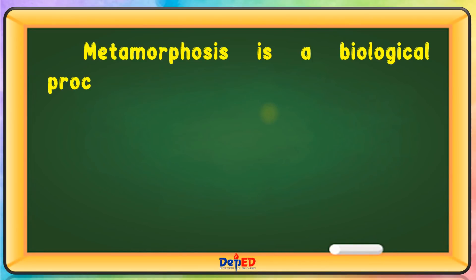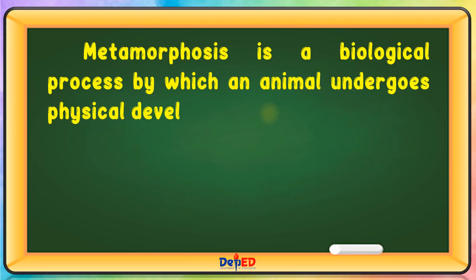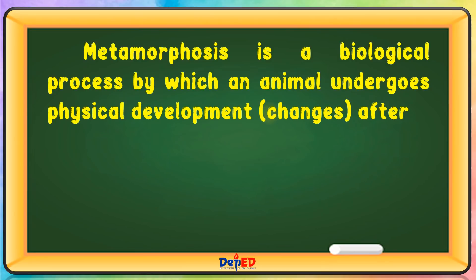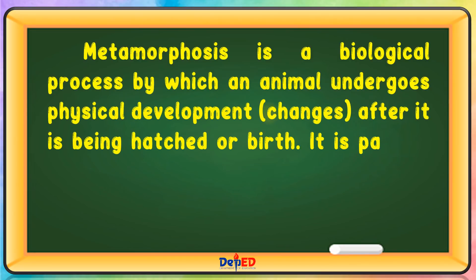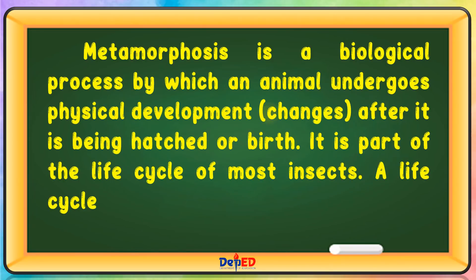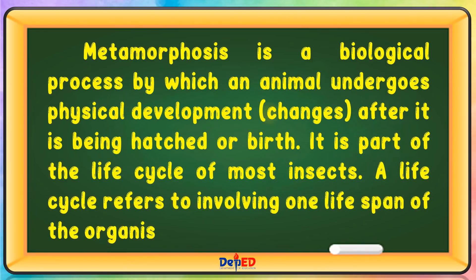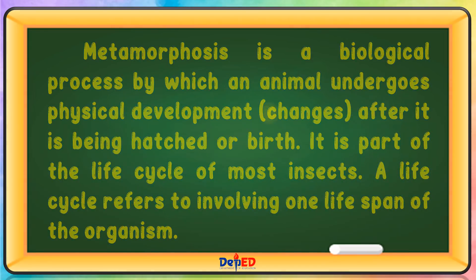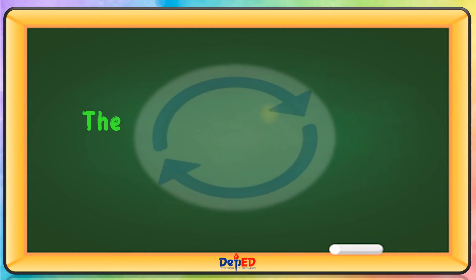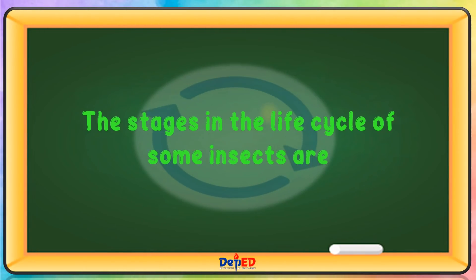Metamorphosis is a biological process by which an animal undergoes physical development or changes after it is hatched or birthed. It is part of the life cycle of most insects. A life cycle refers to involving one lifespan of the organism. The stages in the life cycle of some insects are as follows.